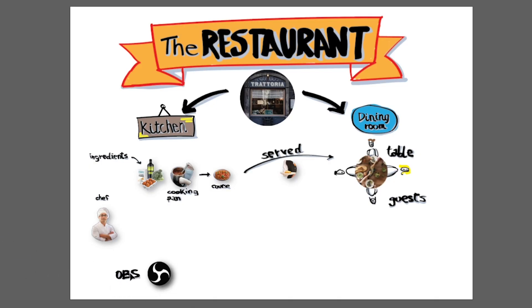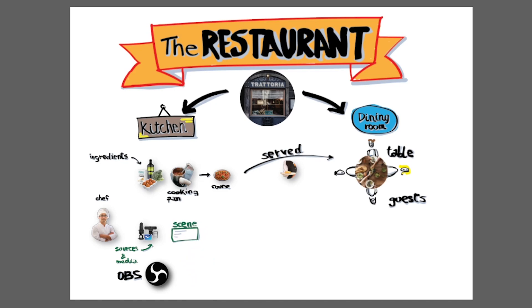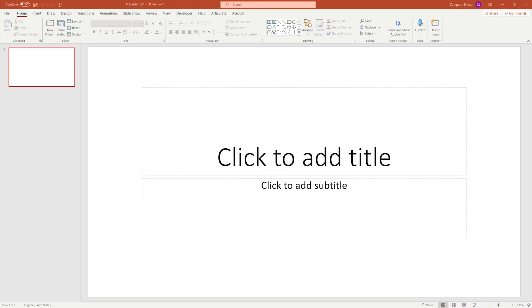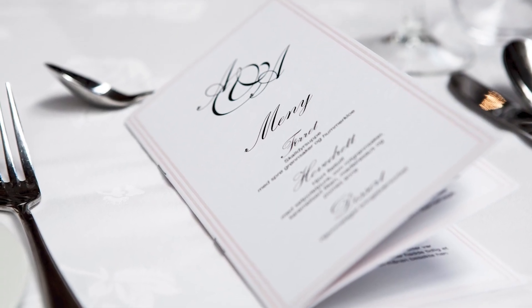Speaking in presentation terms, the restaurant is your overarching project and OBS is the kitchen where you're preparing your presentation — and obviously you are the chef. The ingredients are sources and media like your webcam, a video, some text or overlay graphics that singularly don't make a presentation; they need to be assembled and spiced up. The cooking pan where you throw them in is called a scene. You can consider a scene as an empty slide in PowerPoint or Keynote where you're adding all the elements that represent your message. Similar to PowerPoint where you have multiple slides, in OBS you can have multiple scenes.